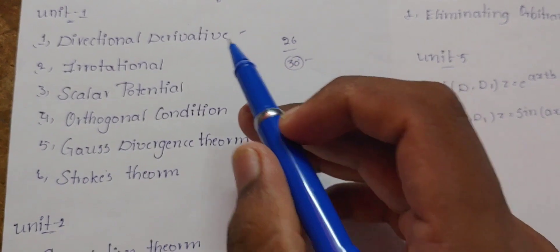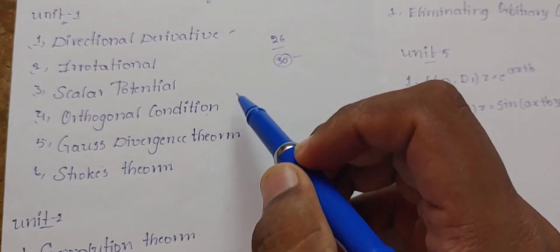And then, Gauss divergence theorem and Stokes theorem is 8 marks.